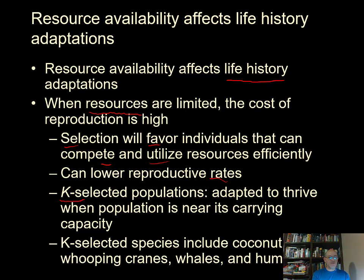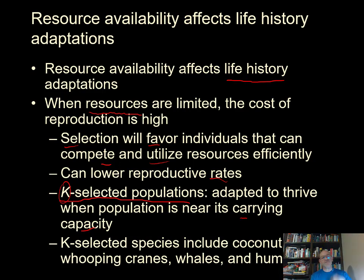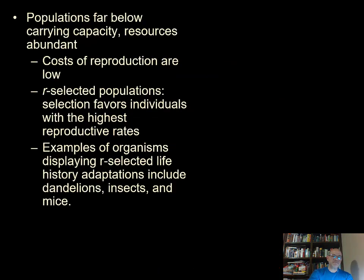There's a category called K-selected populations, relevant to carrying capacity. A K-selected species is adapted to live when a population is near its carrying capacity. Despite limitations on resources, these populations have figured out a way to get by generation after generation and still leave enough offspring for the future. Typical K-selected species include coconut palms, whooping cranes, whales, and humans.